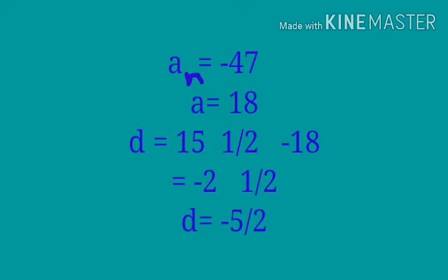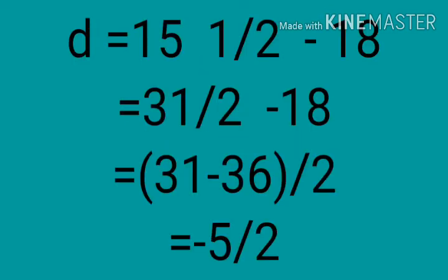Otherwise, you can do that by calculation. 15 and a half as an improper fraction is 31 by 2, so 31 by 2 minus 18. Making 18 as 18 by 1 and doing cross multiplication: 31 into 1 minus 18 into 2 equals 31 minus 36, that is negative 5. By 2 into 1, that is 2. So negative 5 by 2 is the value of D.